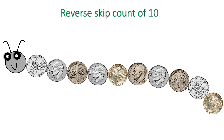When we count dimes, we will use skip counting by 10. Let's count the coins in the caterpillar in reverse order. We have 10 dimes, so we start counting from 100.